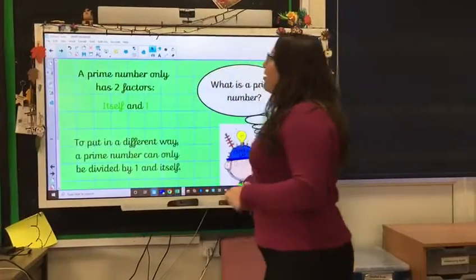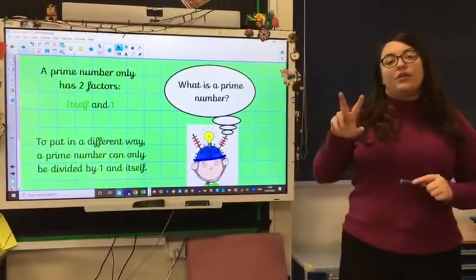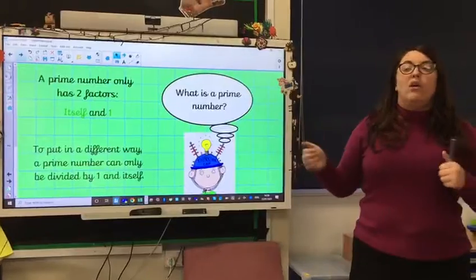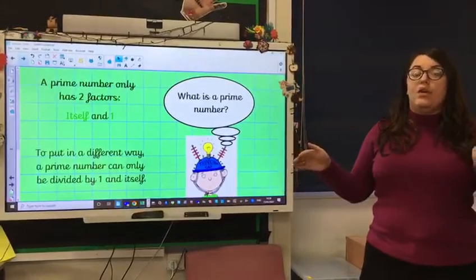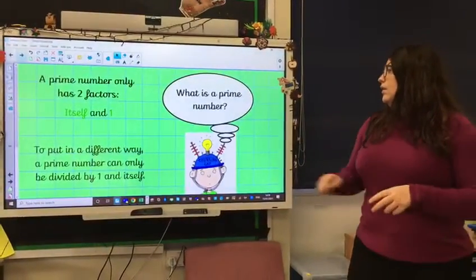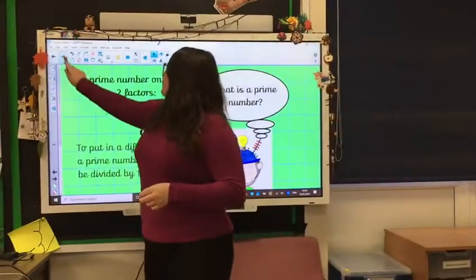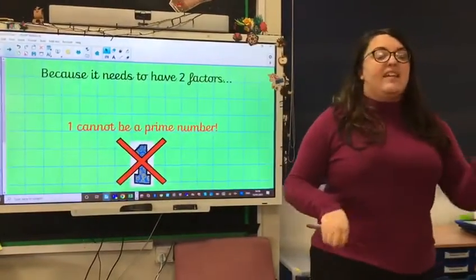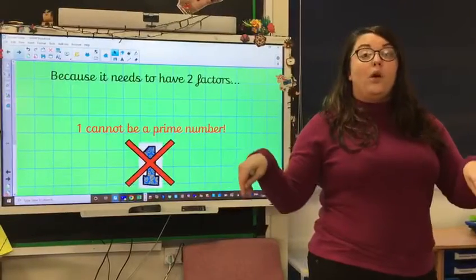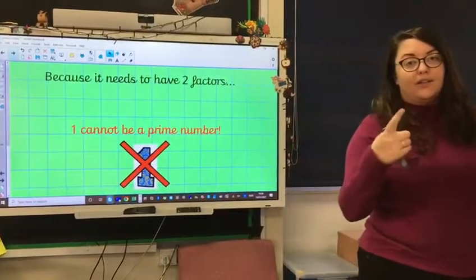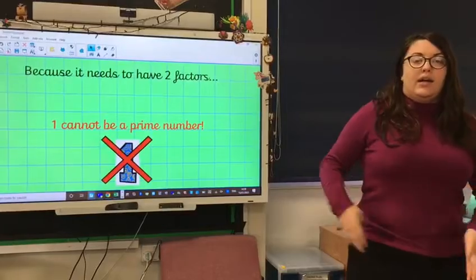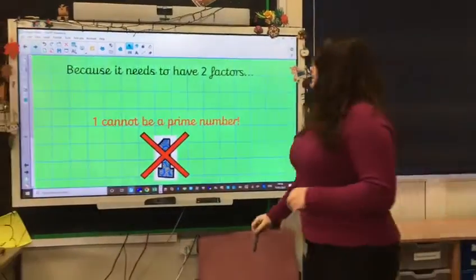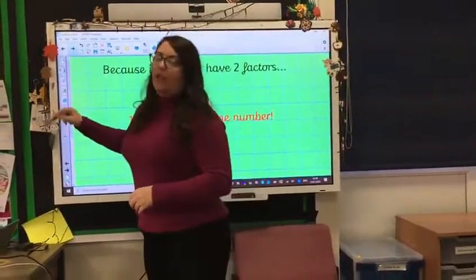So, a prime number is a number that only has two factors, itself and 1. So, it can only be divided by itself or 1. So, because it needs to have two factors, itself and 1, 1 obviously only has 1 factor because itself is 1 and there's 1. So, it cannot be a prime number. That's just a rule we have to learn.